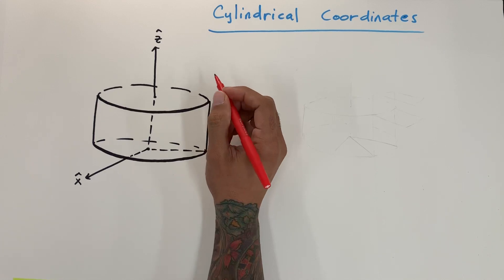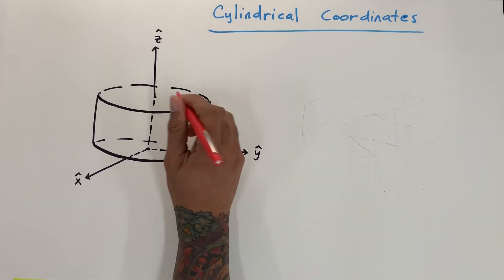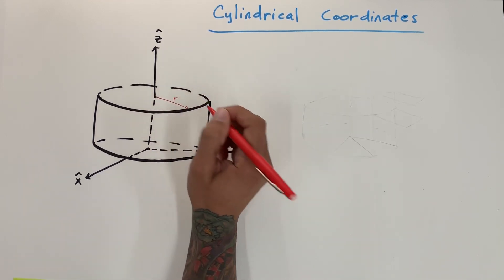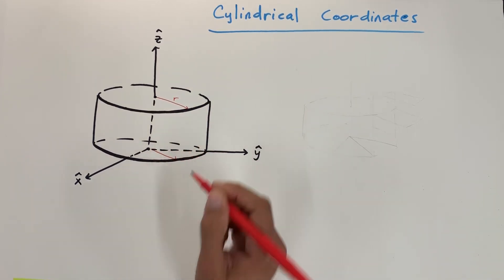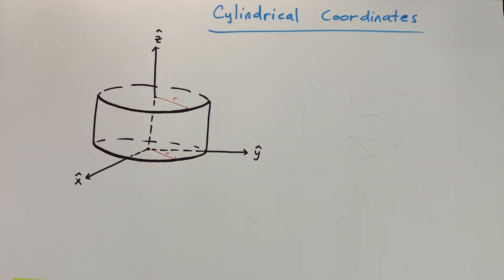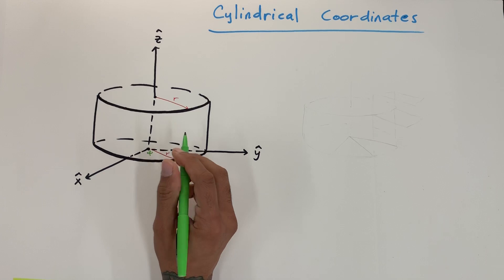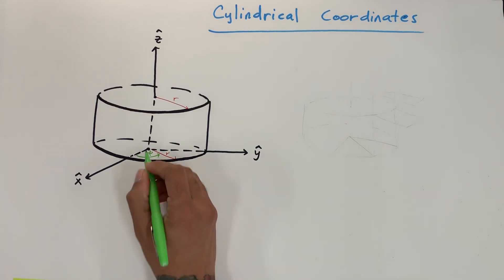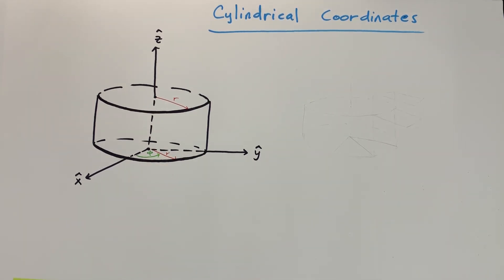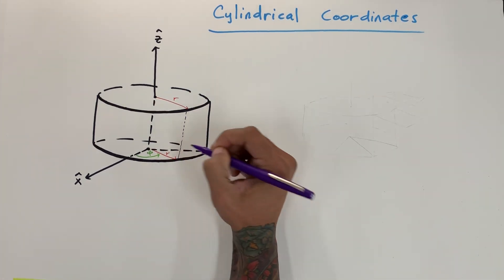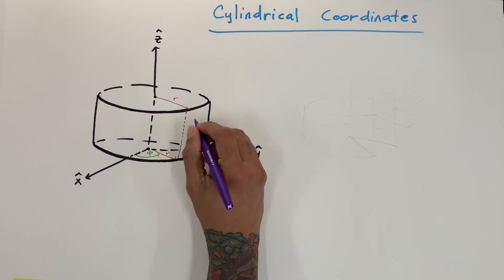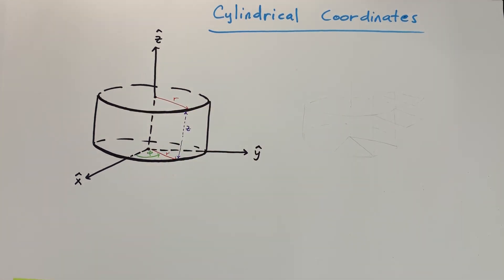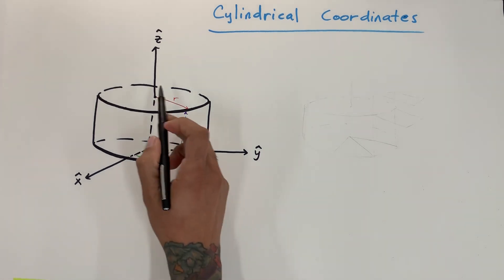We're going to start off by understanding the cylindrical coordinate system. From the center to the outside is going to be a radius R. Just like before, we have Phi that runs in the XY plane — from X towards Y is our Phi. And the distance along the vertical surface is going to be our Z.